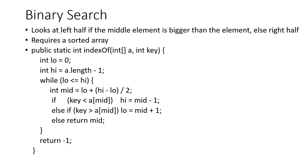Okay, the next searching algorithm is going to be binary search. It looks at the left half if the middle element is bigger than the element that we're searching for. Otherwise, it'll look at the right half. And now this requires a sorted data structure. So if it is sorted, then we can use this method. And it's actually going to run in Big O log N. Which, as we know, is going to be much smaller than N in the linear case.